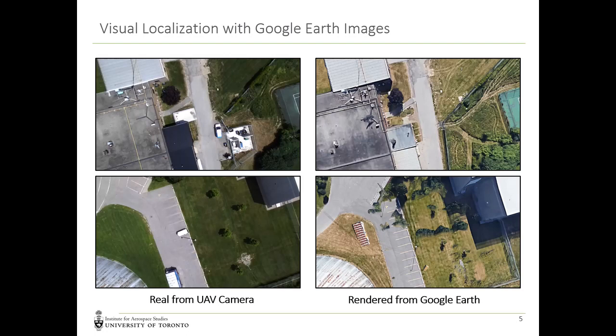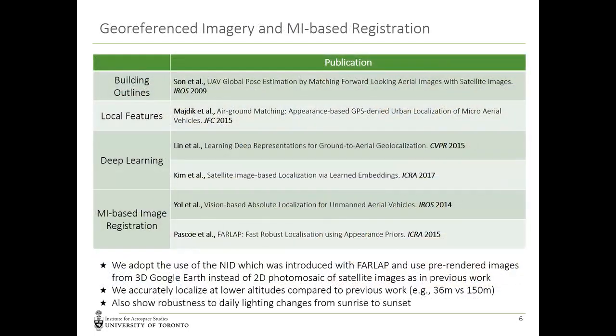To handle this, instead of using local image features or photometric error, we use a dense mutual information-based technique to add robustness to these appearance changes. Some early related work used building outlines to align images, but this required higher altitude flights so that outlines on multiple buildings could be visible. Local features have also been used, but result in a large number of outliers due to the appearance change.